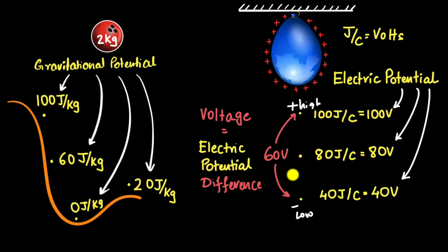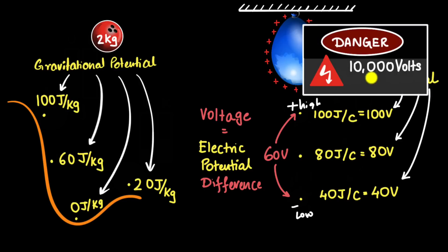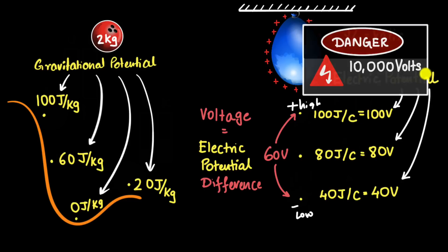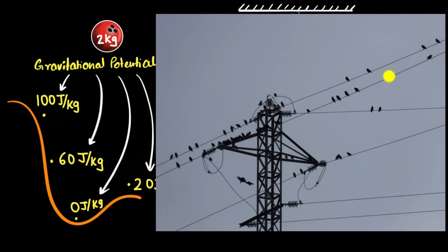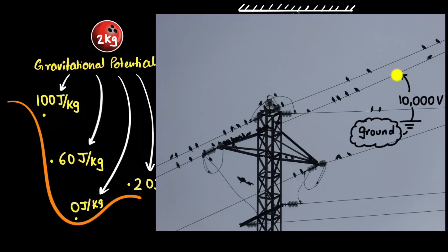Another question: voltage is always defined between two points, an electric potential difference between two points. But we say things like, 'that wire is at very high voltage — 10,000 volts.' What does that mean? When it comes to electric circuits, our second reference point is often considered to be the ground. So when we say a wire is at 10,000 volts, we really mean the electric potential difference between the wire and the ground — the earth — is 10,000 volts.